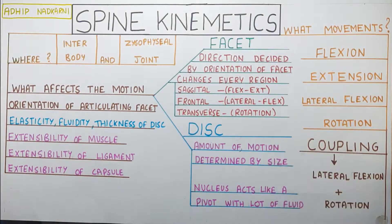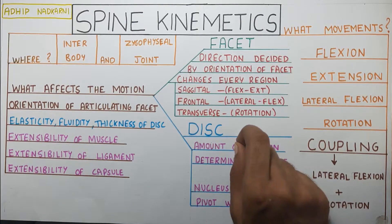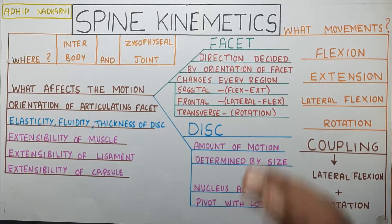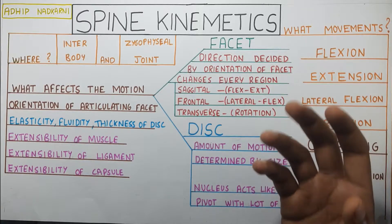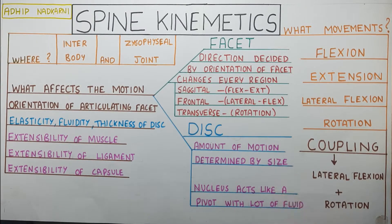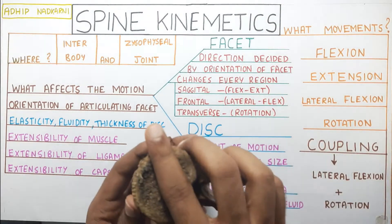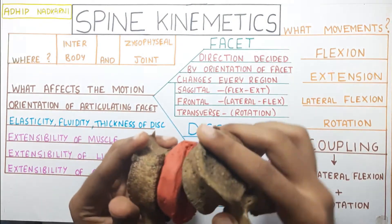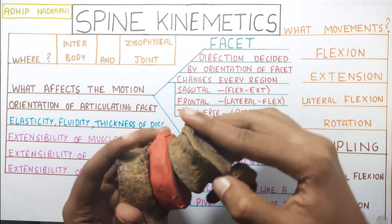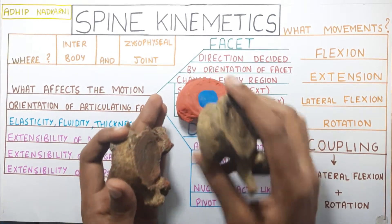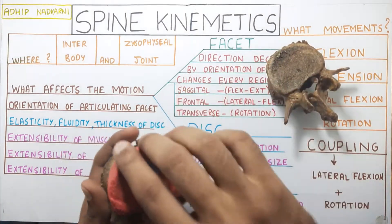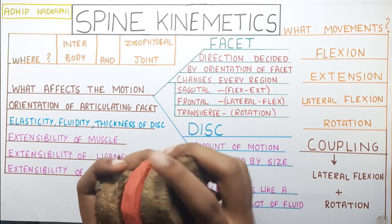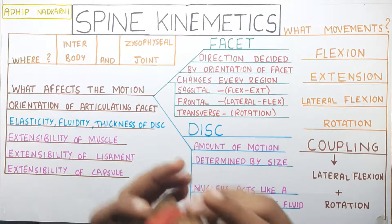Now let us move on to the disc. The disc tells you the amount of motion that is going to occur, and this is determined by the size of the disc — the bigger the disc, the more movement will be occurring. The nucleus in the disc will act like a pivot. Taking the lumbar vertebra with a disc, the lumbar vertebra will have more movement compared to if there is no disc. The disc helps in increasing the movement, and the nucleus acts as a pivot for the vertebras to move on top of one another.